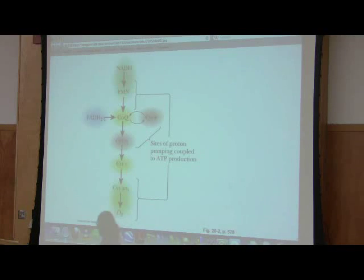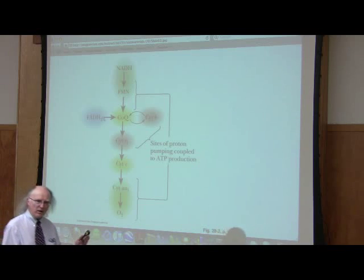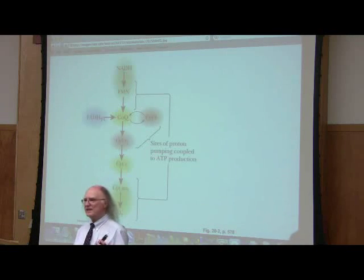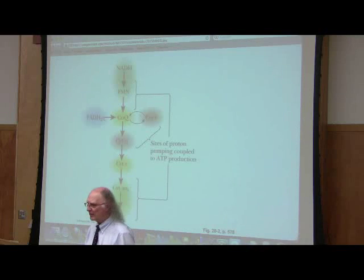Coenzyme Q is also able to accept electrons from a complex that contains FADH2. What does that mean? If you recall, when I talked about the citric acid cycle, I said that all of the enzymes of the citric acid cycle were contained in the matrix except for one. I didn't tell you what the one was. Now I'm going to tell you what the one is.